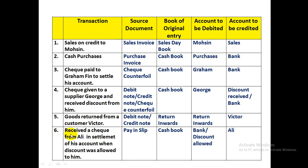Transaction 6: Received a check from Ali in settlement of his account, with a discount allowed to him. We deposit the check using a pay-in slip, which is the source document. This is recorded in the cash book. Bank is debited as it increases; discount allowed is debited as it is an expense. Trade receivable Ali is credited. This is how the business documents table questions in IGCSE and CIE exams are answered.